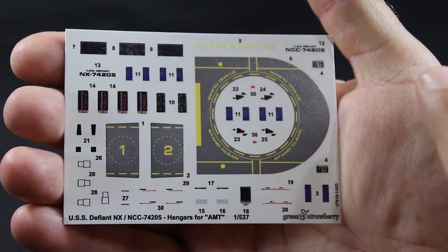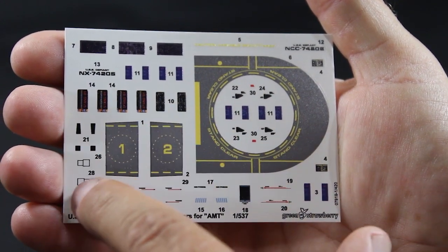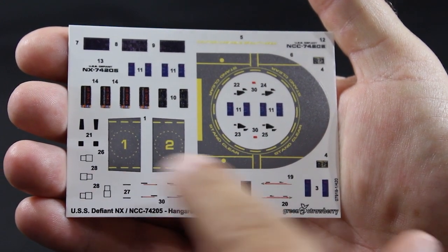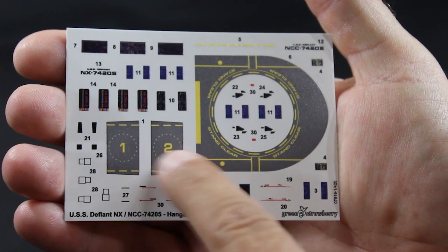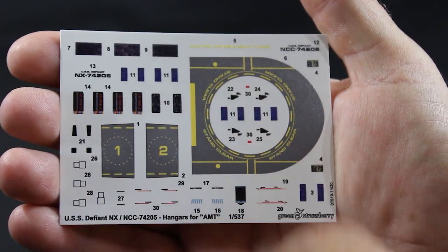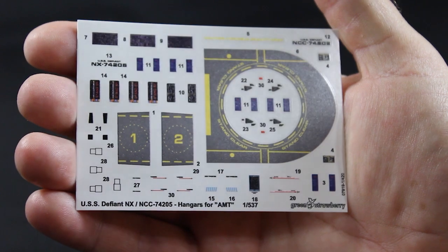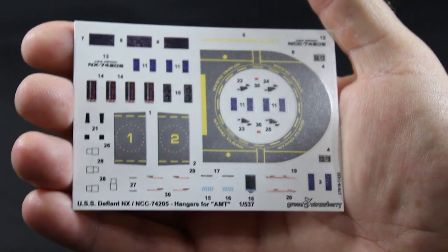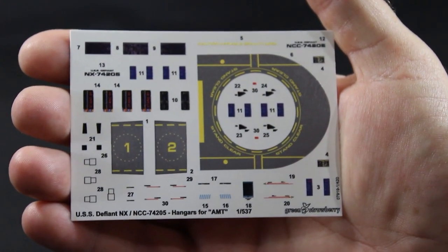The color is nice and saturated. You have extra decals for parts of the ship to give that little extra detail. These are for the side hangar bays and this is for the main hangar bay. Everything's nice and clear and will enhance the build.